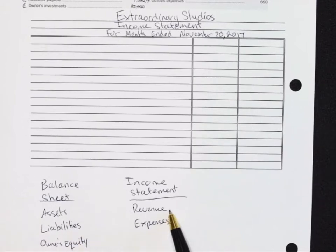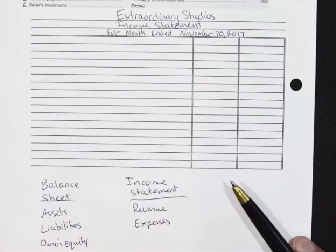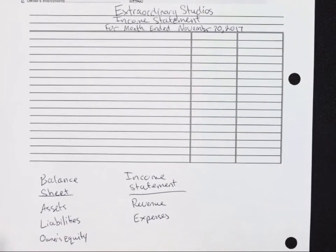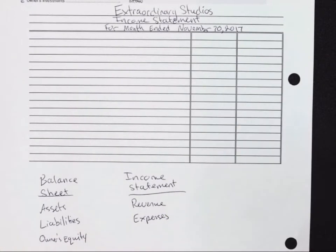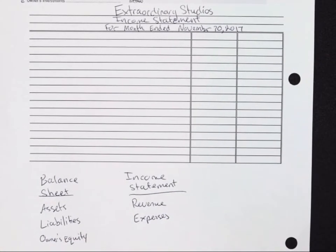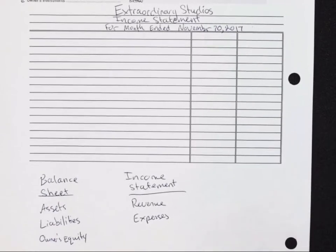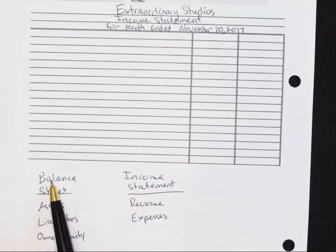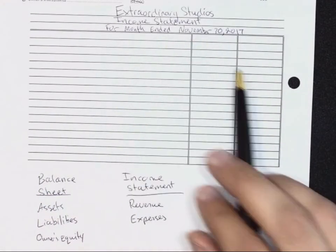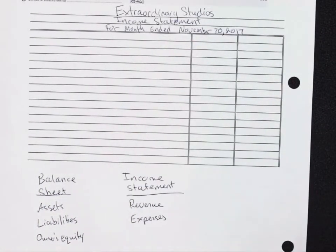The reason income statement accounts are temporary is that if I want to know exactly how just December of Extraordinary Studios did, I can make all of these accounts go down to zero and start fresh. I can never do that with balance sheet accounts. So: temporary and a period for the income statement, just a date for the balance sheet.